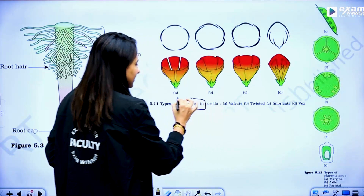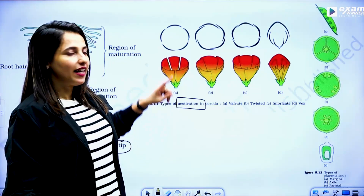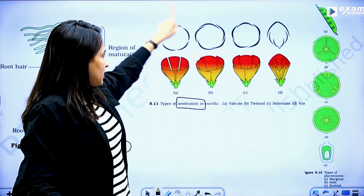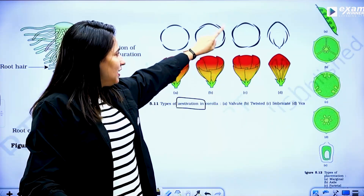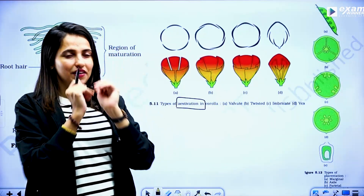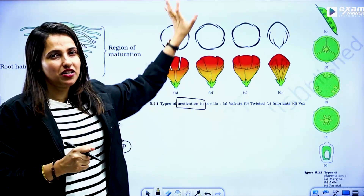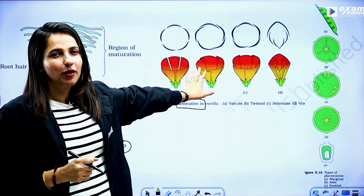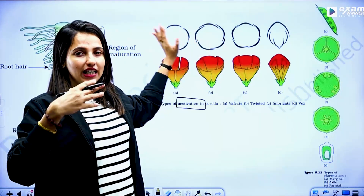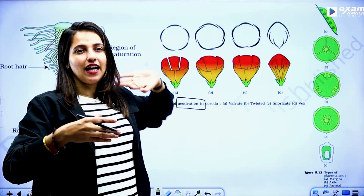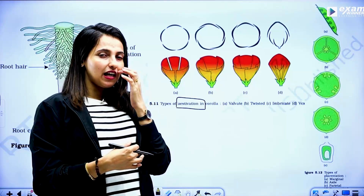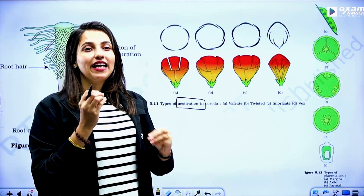Then, types of aestivation. Aestivation — this is valvate aestivation, twisted, imbricate, then vexillary aestivation — that is the important topic. We have to identify the aestivation, look at the aestivation, and look at the example.